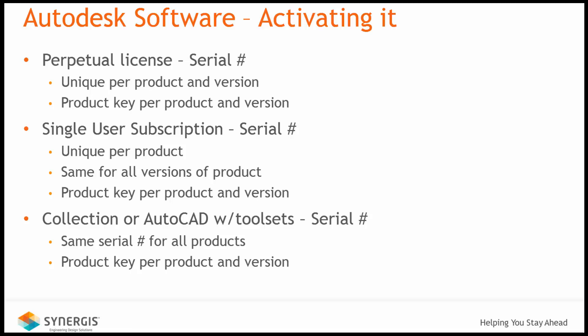The product key is standard for everybody but is specific to the product version you're installing and activating. For example, your AutoCAD 2018, 2019, and 2020 versions would all use the same serial number under a subscription-based product, but the product key would change for each given version. When it comes to collections or AutoCAD with toolsets, the same serial number is used for all products in the collection or toolset — meaning Revit, AutoCAD MEP, AutoCAD, etc., would all use the same serial number assigned to you — but the product key used is solely based on the product and version you're trying to activate.